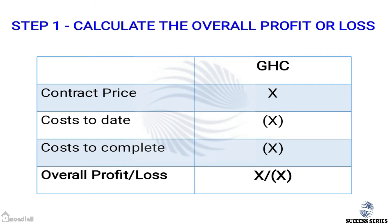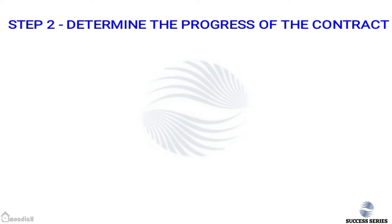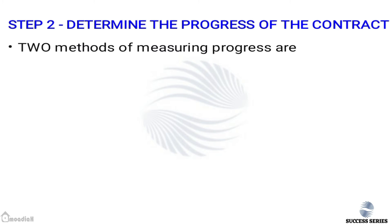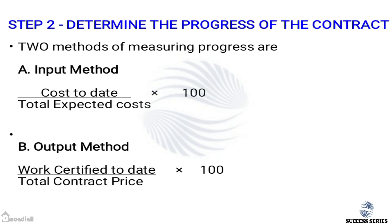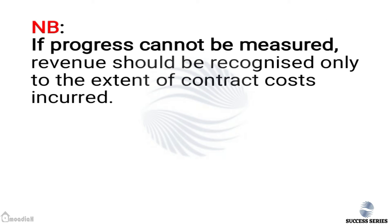Step two is to determine the progress of the contract. We have two ways to ascertain progress: the input method and the output method. The input method is calculated as cost to date over total expected cost multiplied by 100. The output method is calculated as work certified to date over total contract price multiplied by 100.